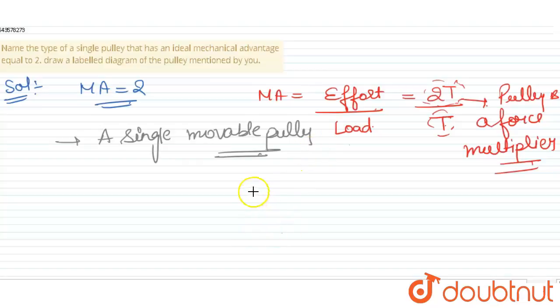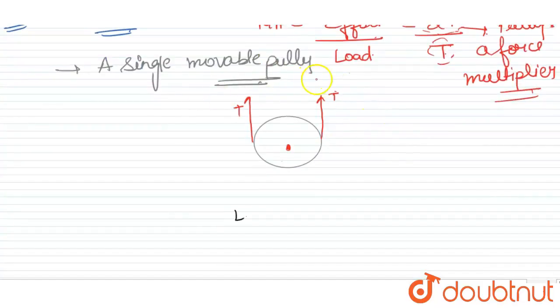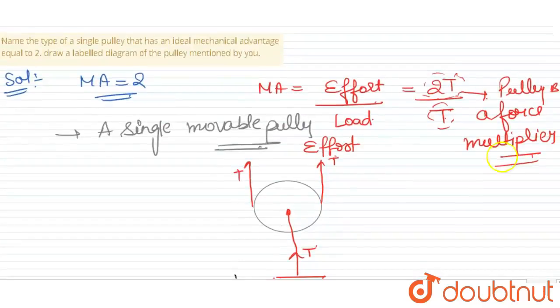If I talk about the diagram, see, suppose it is a pulley. This will be T, this will be T, this will be T, and the load. This is the effort, and the load is somewhere here with tension T. So this is a single movable pulley.